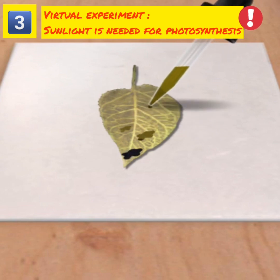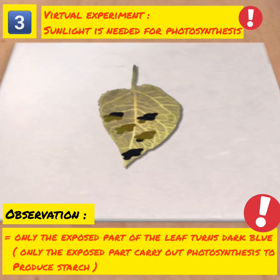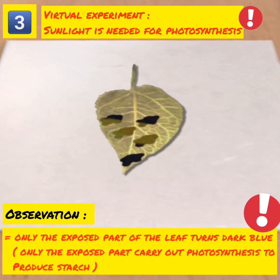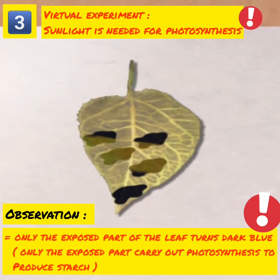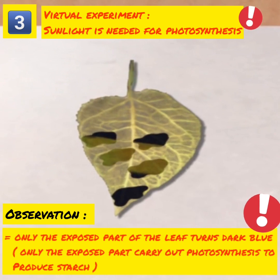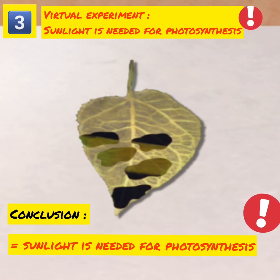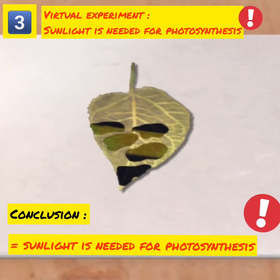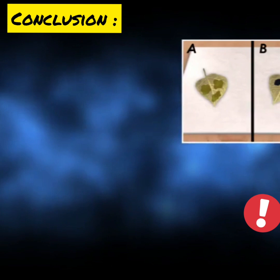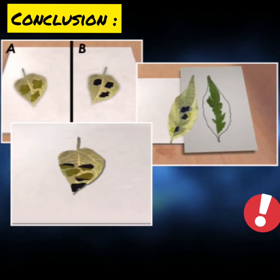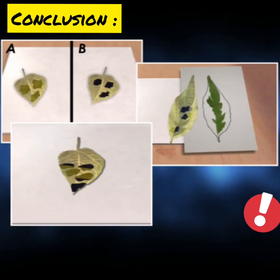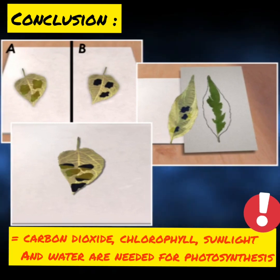Only the exposed portion of the leaf turns blue-black when a few drops of iodine solution are added. This shows that only the exposed portion of the green leaf carries out photosynthesis to produce starch, and it takes place when there is sunlight. Photosynthesis will not take place if any of these factors — carbon dioxide, water, sunlight, and chlorophyll — is absent.